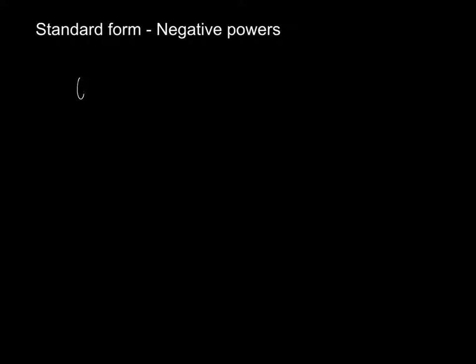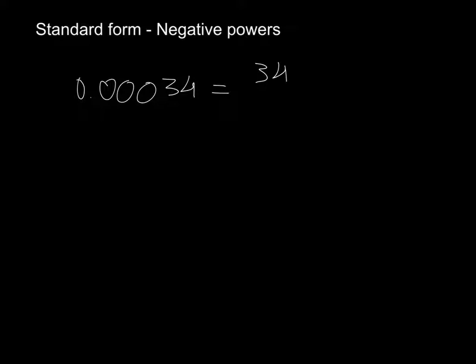So remember that when you have things like 0.00034, this is the same as saying 34 divided by some number. And this number would be 1 and 5 zeros — so 100,000.